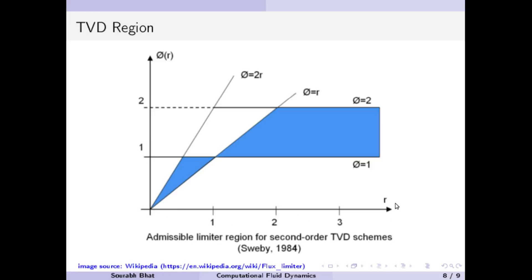We have defined the quantity r and the limiter phi(r). It has been seen that to get rid of oscillations — to get a monotonicity-preserving solution — we have to make sure the solution is TVD. It can be theoretically proven that the blue area on a phi-r plot is the region which will be total variation diminishing.